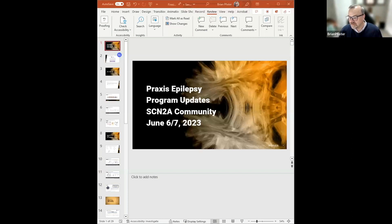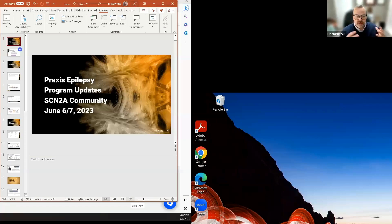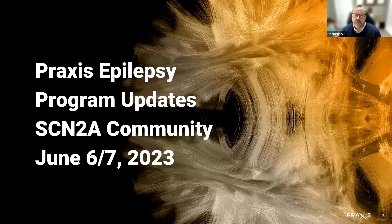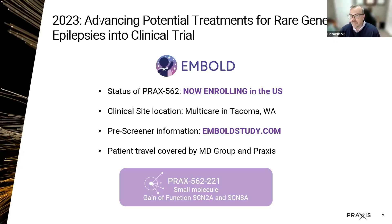To give you a quick update on where we are: Praxis has a number of programs going on, but today I want to focus on the one that affects your community the most — the SCN2A community. In the US, we have a clinical trial up and running currently. We have a site in Tacoma, Washington. There is prescreener information at emboldstudy.com, where patients in the US can find inclusion criteria and related information.